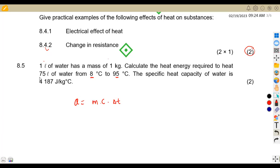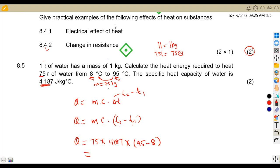So the mass of water is at 75 liters. But take note, we are given that one liter is equivalent to one kg. So 75 liters is equal to 75 kg. The mass is at 75 kg. And here we have the temperature T1 and the final temperature T2. Take note, the change in temperature means T2 minus T1. So you can write this formula as Q equals MC times T2 minus T1. The mass is 75 times the specific heat capacity of water, which is 4187 times 95 minus 8.